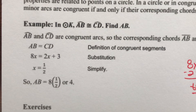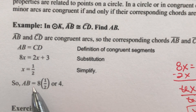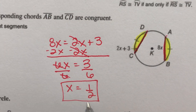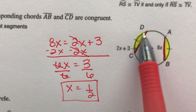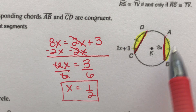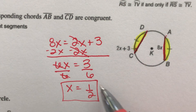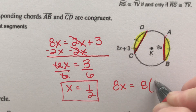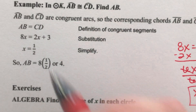It asked a further question — find the measure of AB. AB and CD are congruent. So once I know what X is, I can plug it back into AB, which is 8X. So 8X equals 8 times one half, because X is one half, and half of 8 is 4. So the length of AB is 4 units.